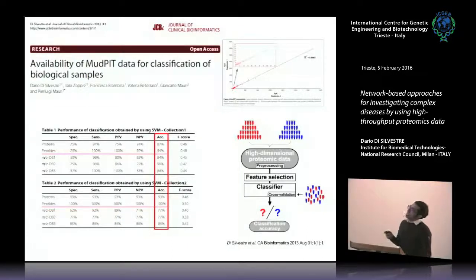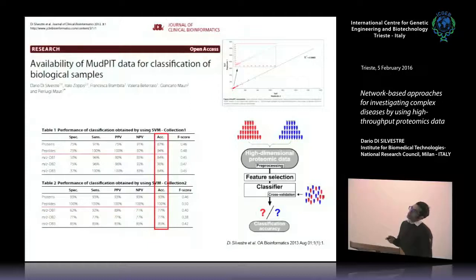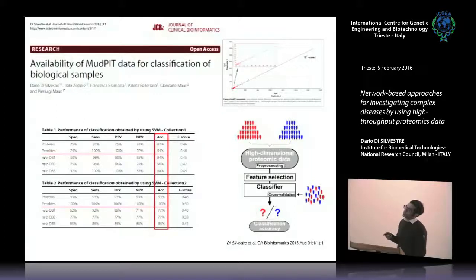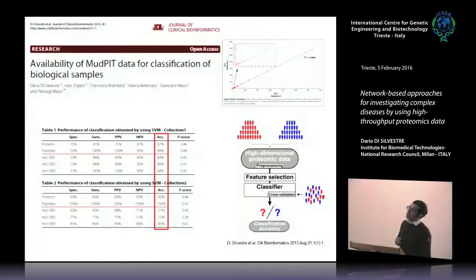Using proteins and peptides, compared to spectra alone, we obtained better classification performance. In particular, using peptides across two different collections of data, we obtained 100% accuracy — all unknown samples were correctly classified.